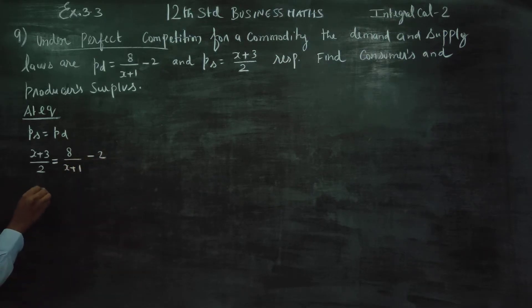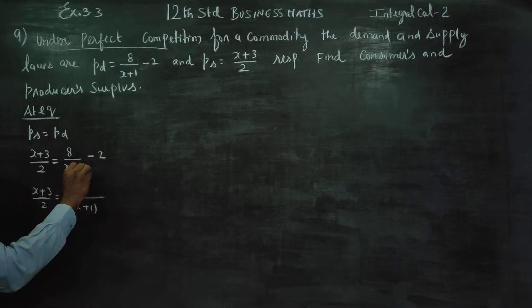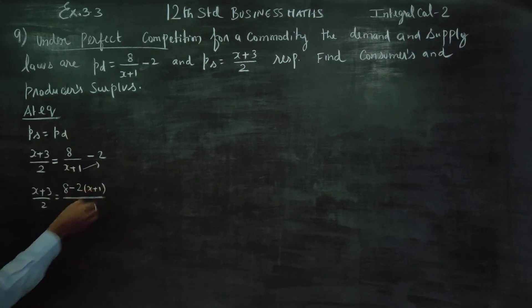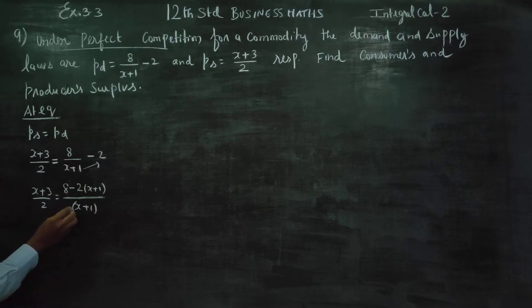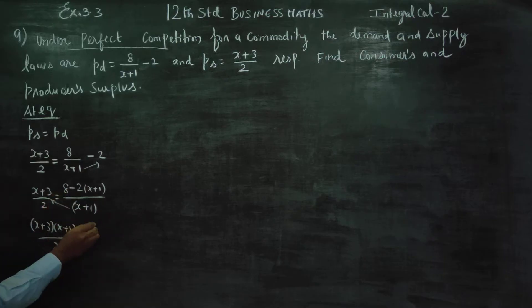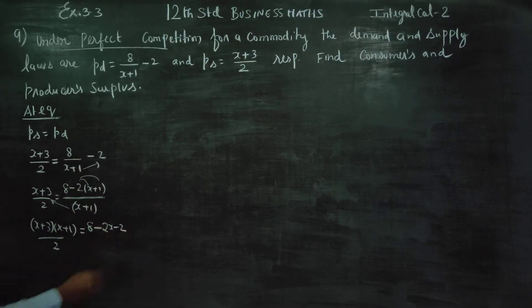If we say (x + 3)/2, then cross multiplying: (x + 1) times (x + 3) equals 8 minus 2(x + 1), which gives minus 2x minus 2.